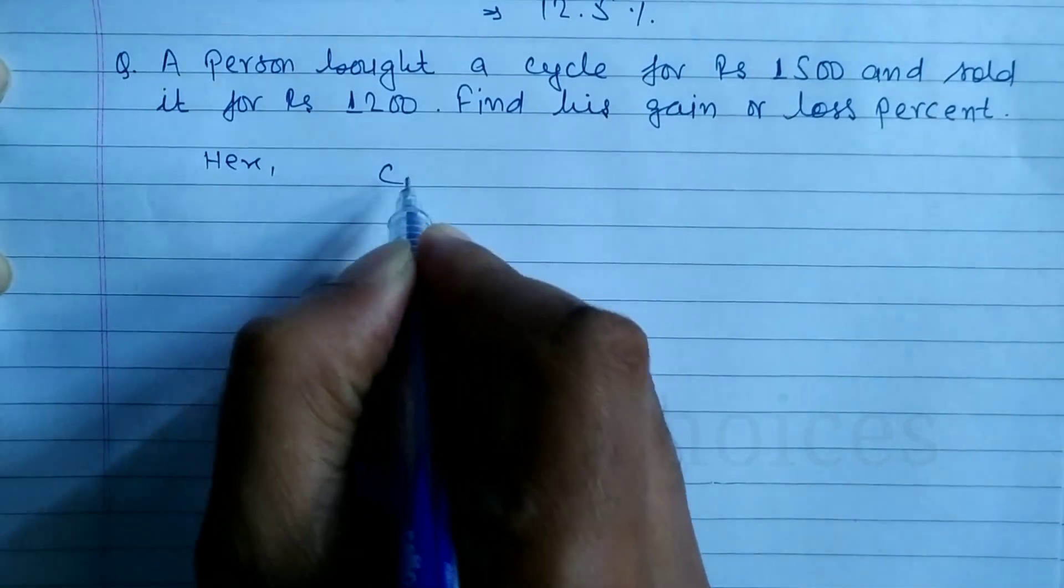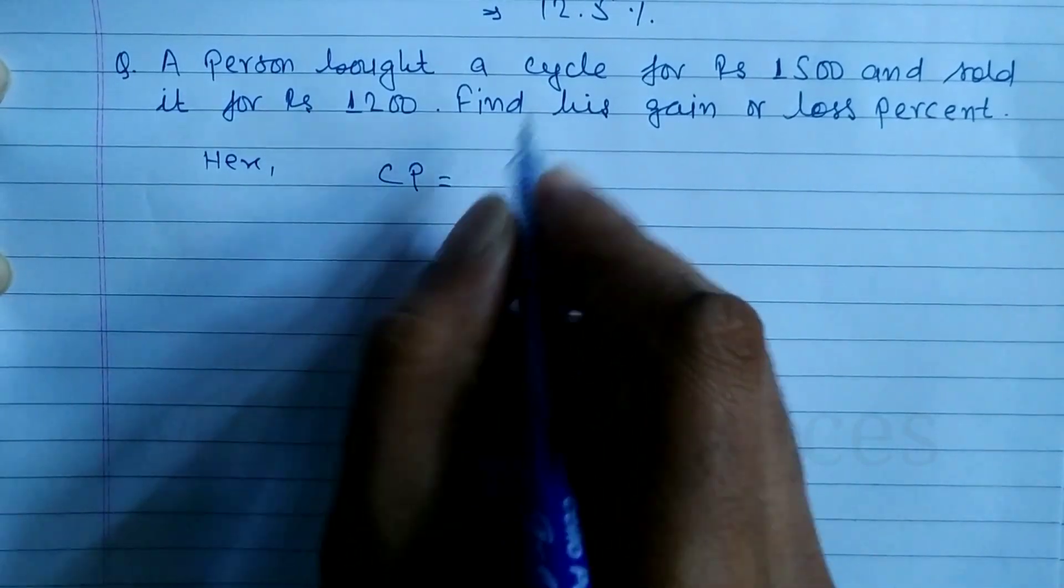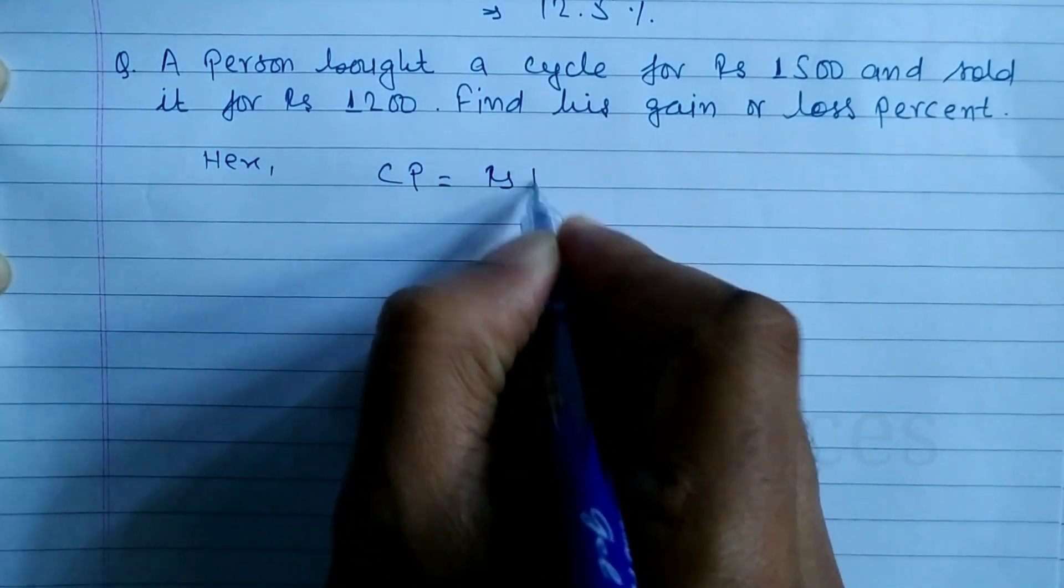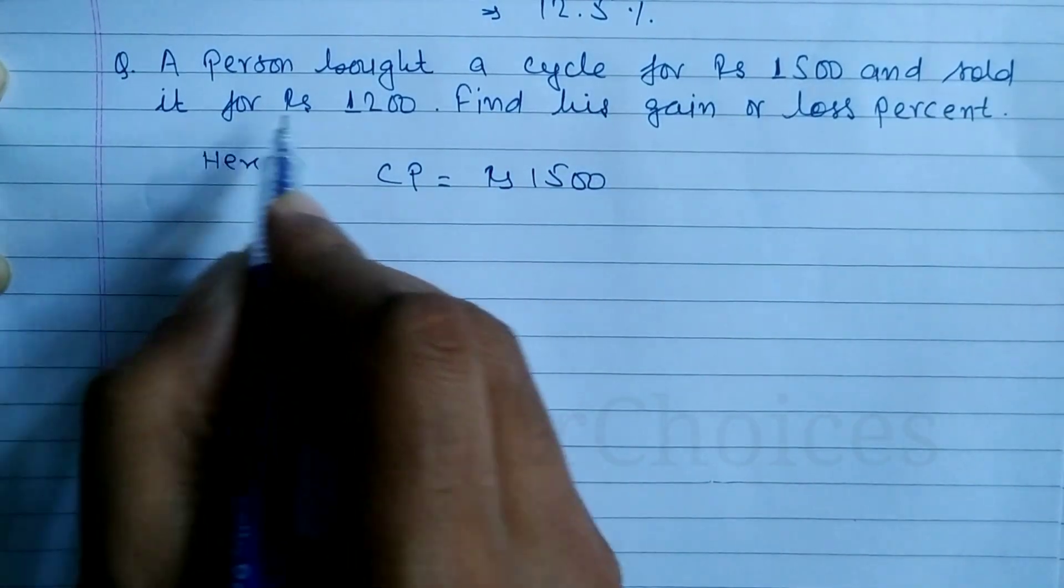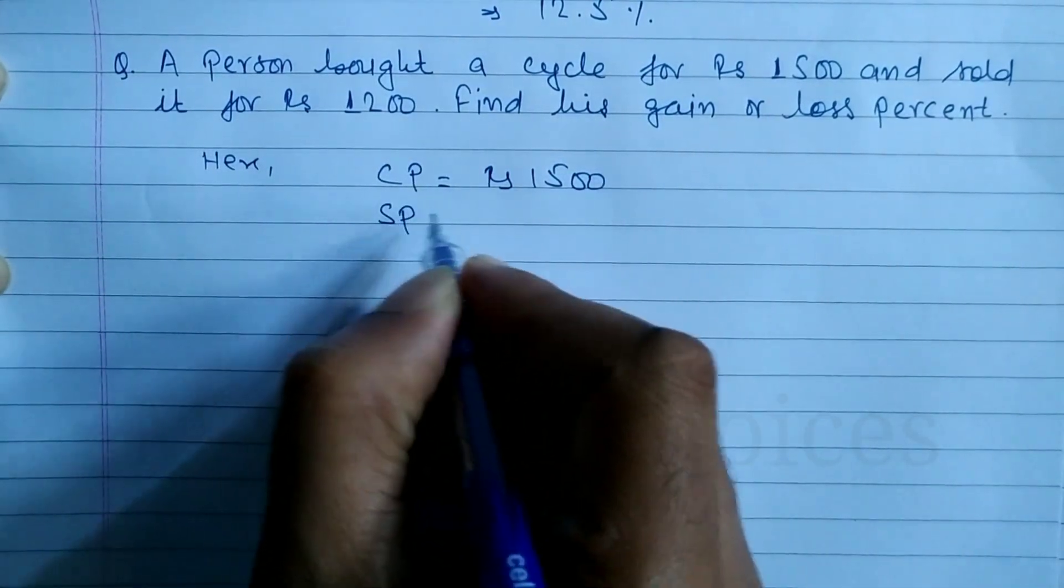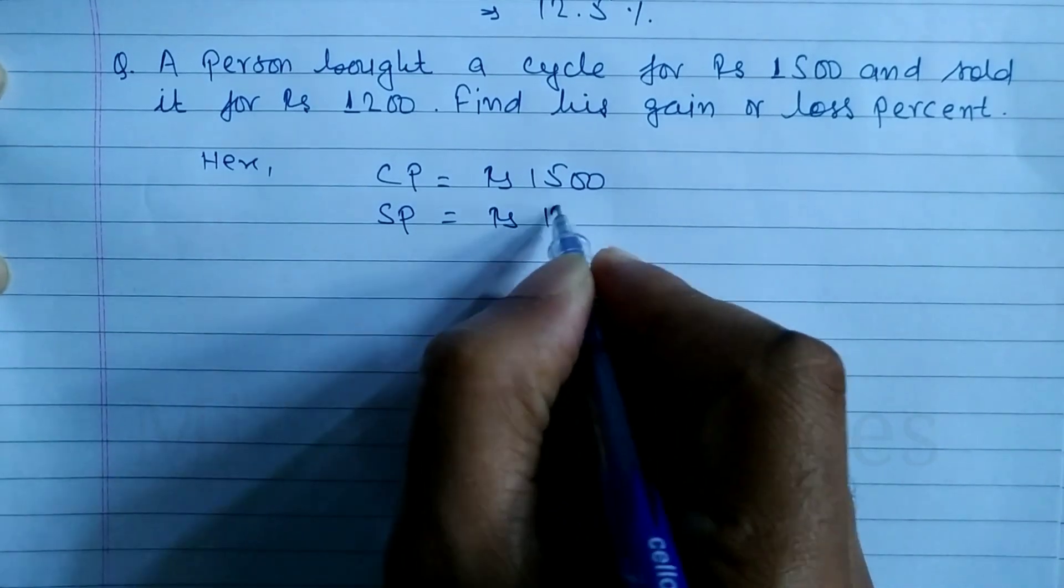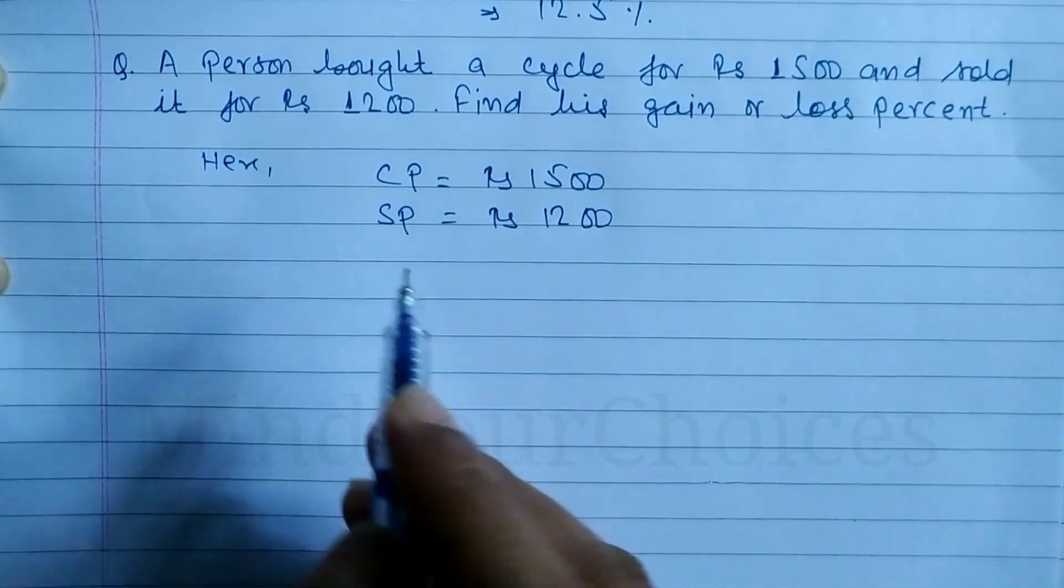Here, CP cost price of cycle is equal to rupees 1500. After that, sold it for rupees 1200. Selling price, sold it, so SP is 1200.